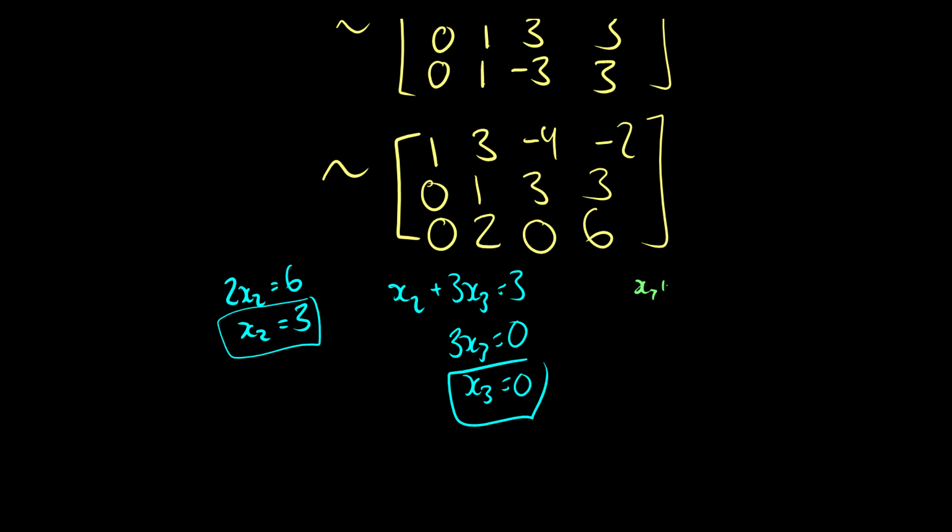So that's good. And now we can use the first line to figure out the last bit. So that's going to say x1 plus 3x2 minus 4x3 is equal to negative 2. So this is saying x1 plus, well, x2 is equal to 3. So x1 plus 9, x3 is equal to 0. So x1 plus 9 is equal to negative 2. So x1 is equal to negative 11.